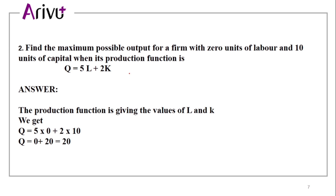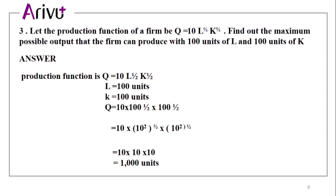Next question: Find the maximum possible output for a firm with 0 units of labor and 10 units of capital when its production function is q equal to 5L plus 2K. Here the production function is q equals 5L plus 2K. Substituting: q equals 5 into 0 plus 2 into 10, which gives 0 plus 20, equal to 20. So the answer is 20.